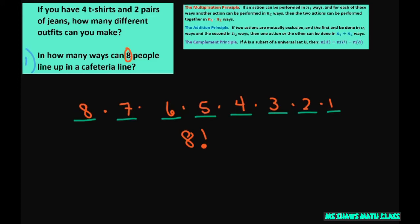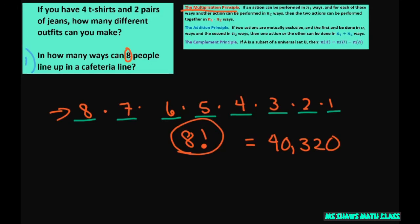You can put that in your calculator and calculate it that way versus typing it all in. That's going to give you 40,320. Again, we use the multiplication principle, and that's it. Thank you, have a nice day, bye-bye.